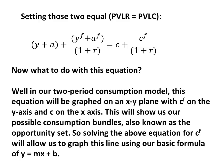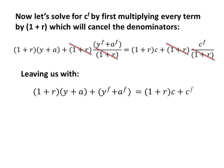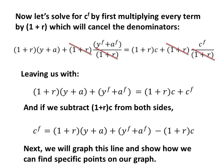Solving the above equation for CF will allow us to graph this line using our basic formula Y equals MX plus B. Let's solve for CF by first multiplying every term by 1 plus R, which will cancel the denominators. That's going to leave us with: (1+R)(Y+A) + YF + AF = (1+R)C + CF. If we subtract (1+R) times C from both sides, we get CF = (1+R)(Y+A) + YF + AF − (1+R)C. We'll now be able to graph this line and find specific points on our graph.